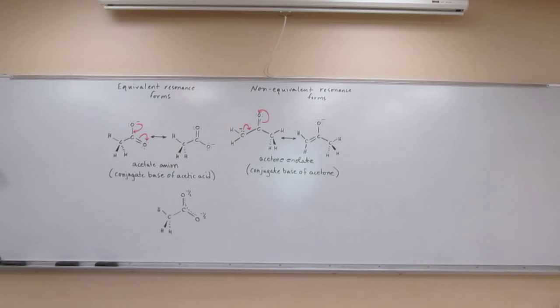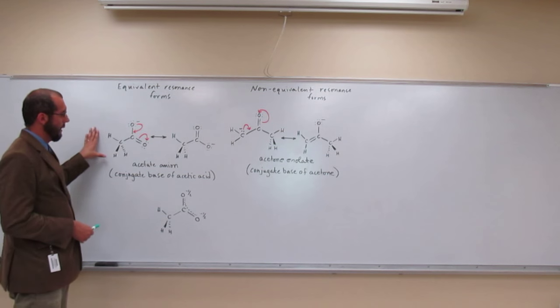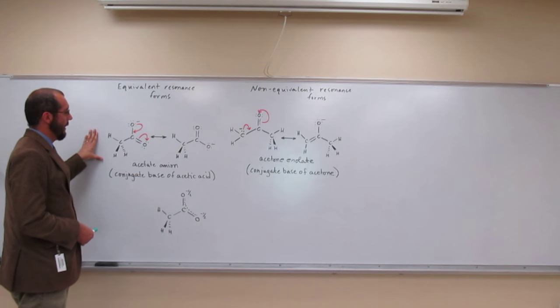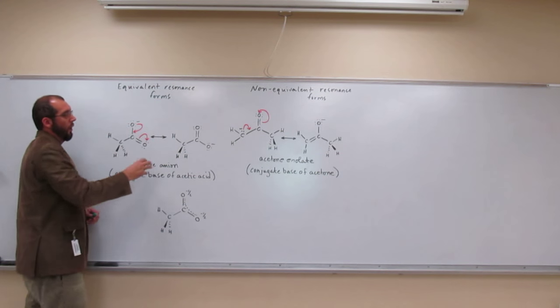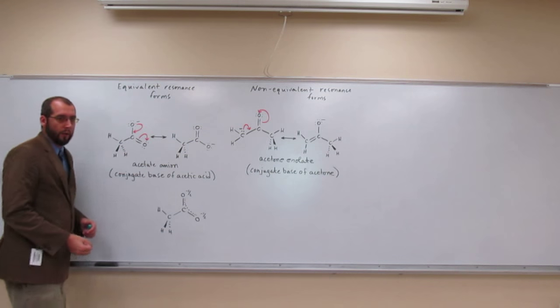So when we have equivalent resonance forms, we have something like the system that we have with the acetate anion, where the negative charge can be shown to be on one oxygen or on the other oxygen.